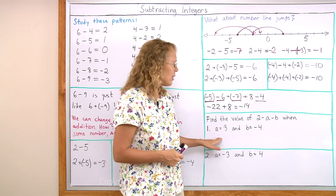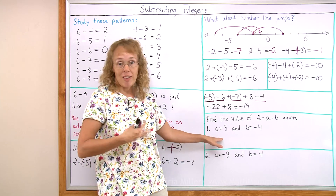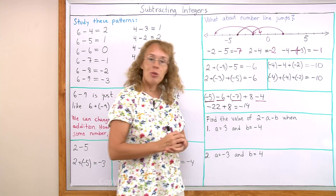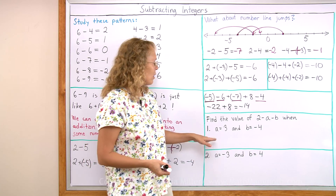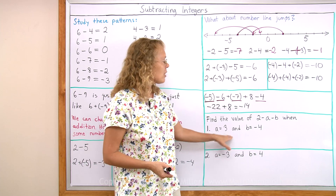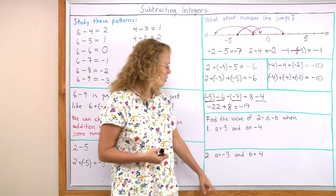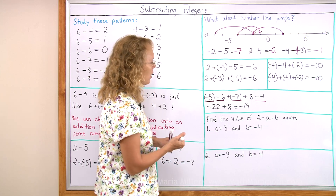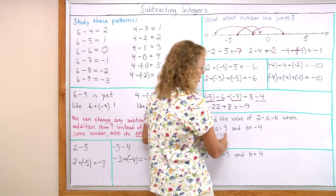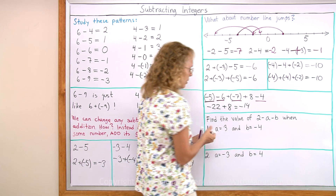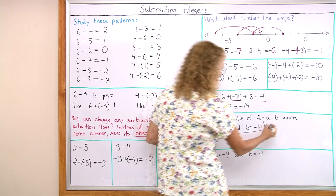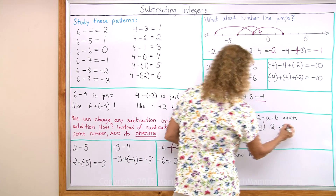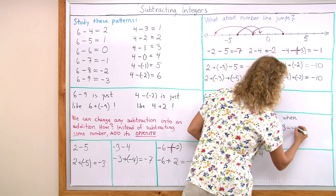Now lastly, we have an expression — we're going to evaluate an expression. Find the value of 2 minus a minus b. First, a is 3 and b has the value of negative 4, and then something else the other way around. So I just plug in 3 here and negative 4 there and see what I get. I will have 2 minus 3 minus negative 4.